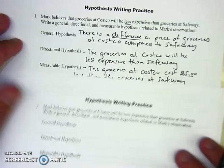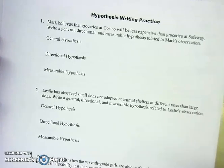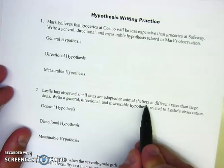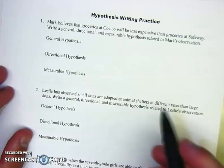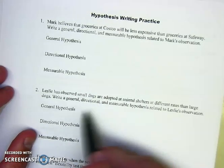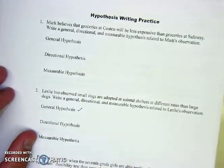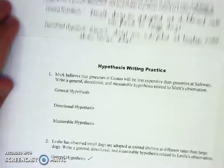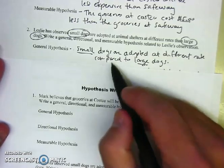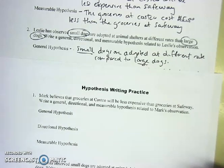The second example is with Leslie, who observed differences between animal shelters regarding small and large dogs. This was done strategically — I do not tell you what that rate is; I only say they are adopted at different rates. So this gives you more of a general starting point. It might be easier to start with the general hypothesis statement because it doesn't say more or less. A general hypothesis would be: 'Small dogs are adopted at different rates compared to large dogs.' Again, it's a comparison. You could word it as 'there is a difference in the adoption rate' — that's perfectly fine.